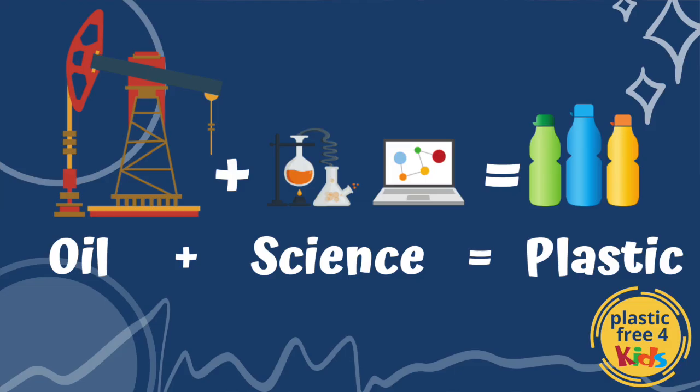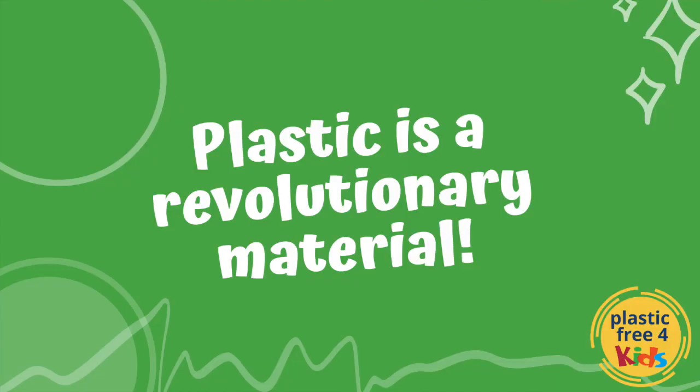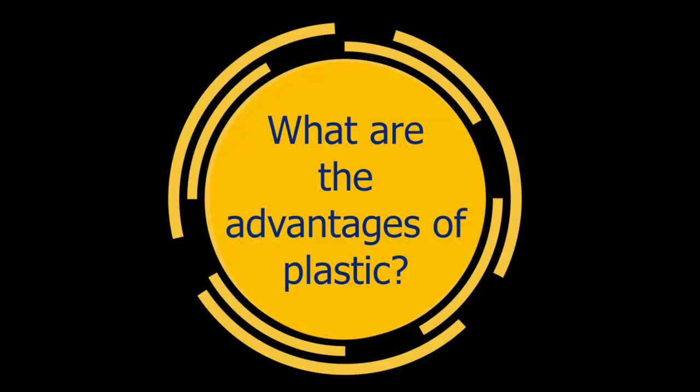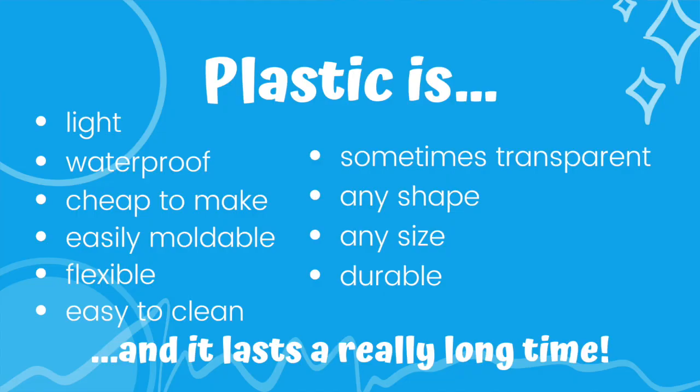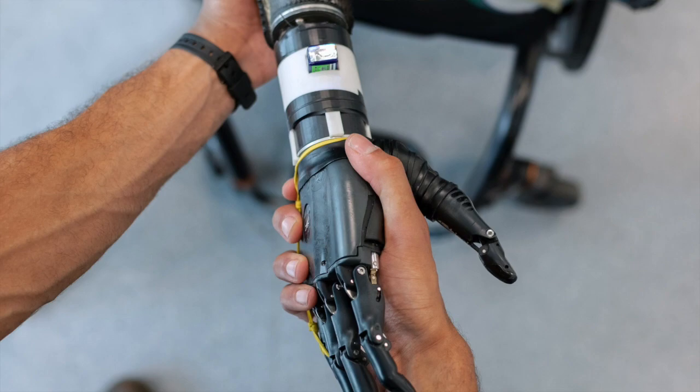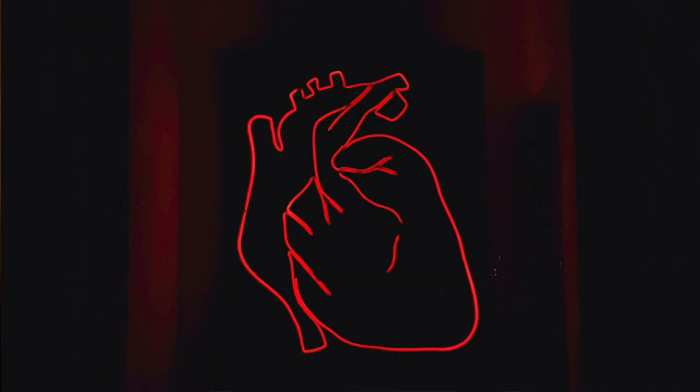Over the next few decades, they made more and more different types of plastic. During World War II, plastic became increasingly popular and people all around the world were amazed at this revolutionary material. Let's come up with a list of adjectives that describe the advantages of plastic. It's light, waterproof, cheap to make, easily mouldable, flexible, easy to clean, it can be transparent, made into loads of different shapes and sizes, it's durable and it lasts a really long time. Plastic can literally be life-changing when used to create a prosthetic limb or a tiny medical device that can go right inside your heart and save your life.